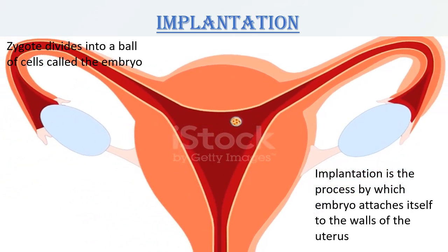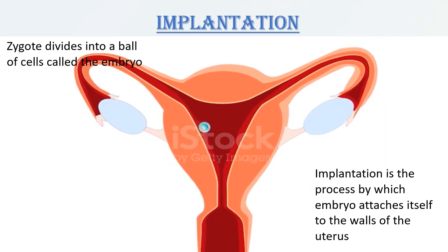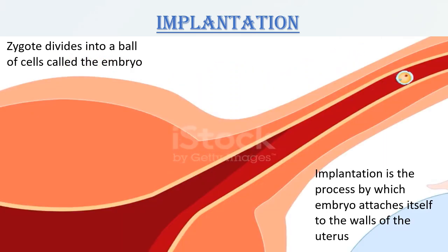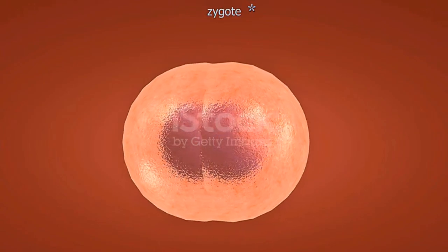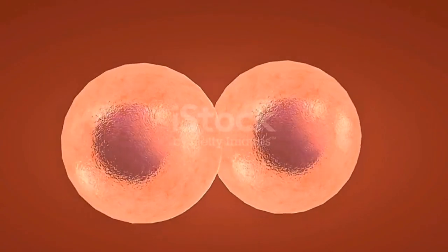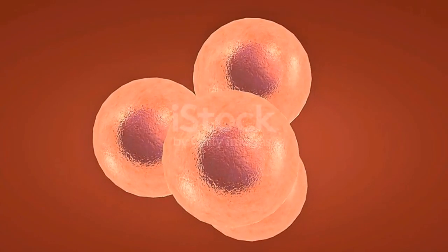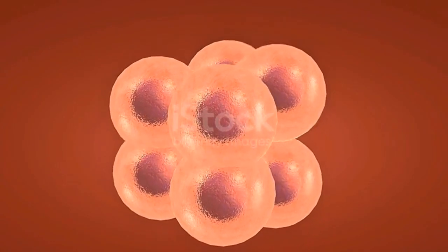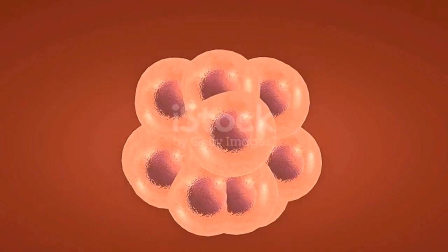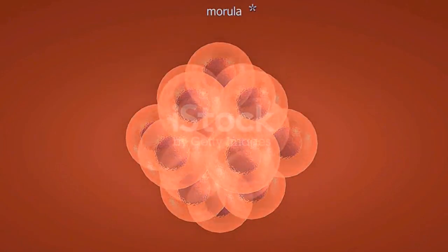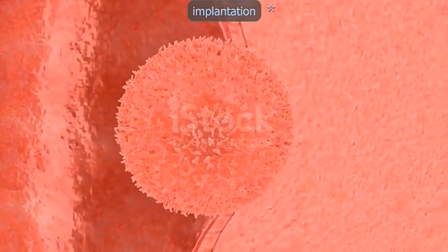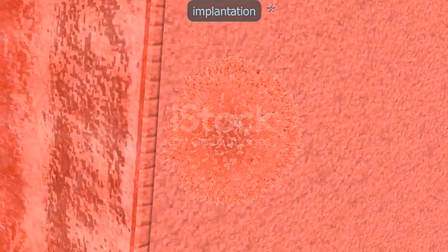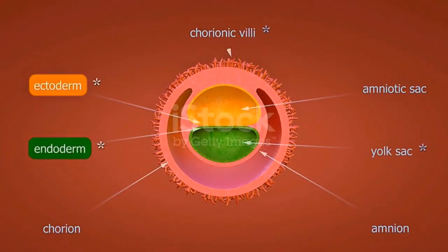Implantation is the process by which the embryo attaches itself to the walls of the uterus. After fertilization, the single cell divides into two cells, then four cells, then eight cells — continuing to divide into more cells called the morula, and then into more cells called the blastocyst. This blastocyst attaches itself to the walls of the uterus, and this process is called implantation.